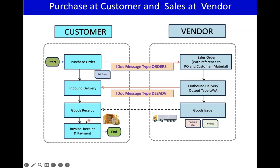Once the truck has been received and we do the goods receipt, we send the invoice copy to the finance team. The finance team does the invoice receipt and processes the payment, completing the P2P process. Overall this is the P2P process you are aware of, with a few additional details highlighted. At the vendor level the sales process happens; at the customer level the purchasing process happens. These kinds of EDI interfaces can occur between the two sides.